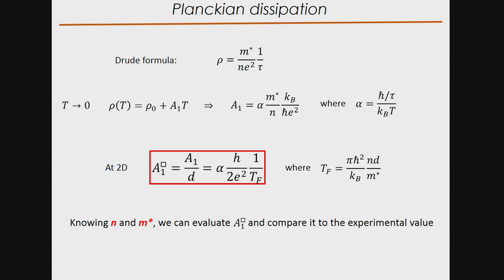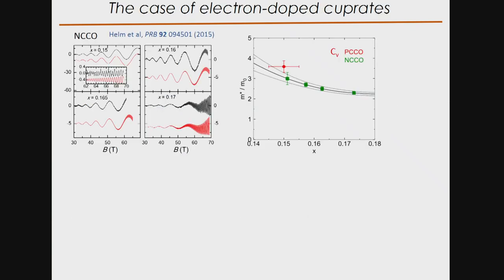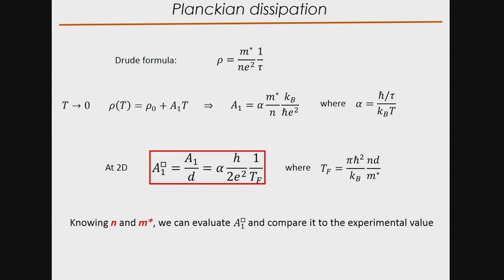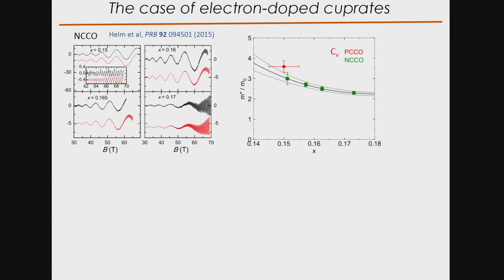In two dimensions for the cuprate, the A₁² coefficient is given by a fundamental constant times α times 1/T_F, where T_F is the Fermi temperature — which is simply the ratio of the carrier density over m*. That means if we know n, the carrier density, and the effective mass m*, we can evaluate A₁² and compare it directly to the experimental value. For the most convincing case — the electron-doped system — quantum oscillations have been measured and from them we can deduce an effective mass.